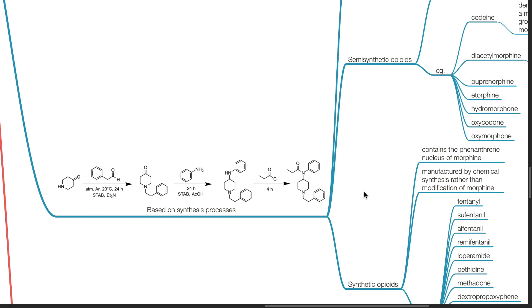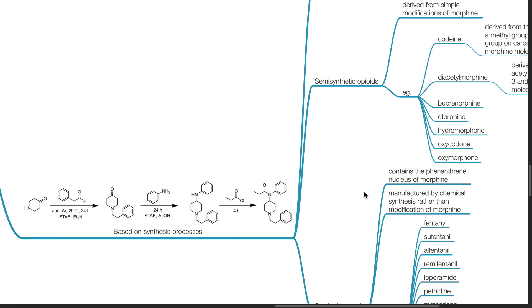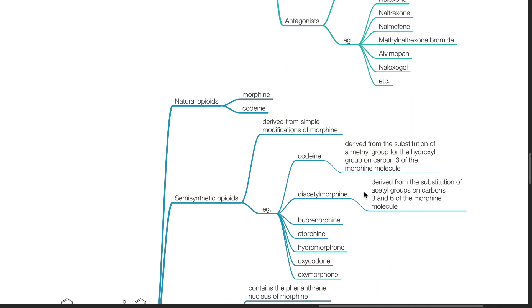Opioids can be classified based on synthesis processes. Natural opioids such as morphine and codeine are found in the opium poppy.